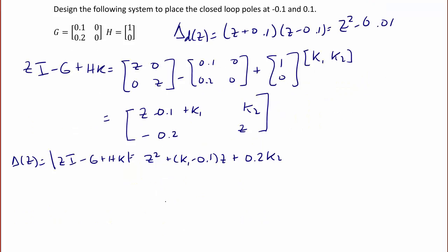As before, we equate coefficients. We get that K1 minus 0.1 must equal 0, so K1 is equal to 0.1. And then we have 0.2 K2 is equal to negative 0.01, so K2 is equal to negative 0.05.